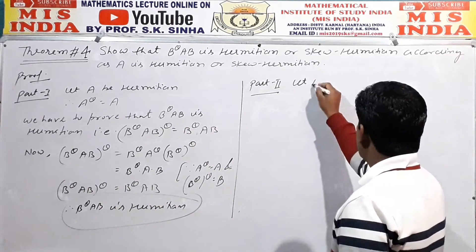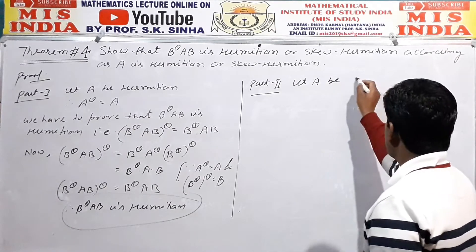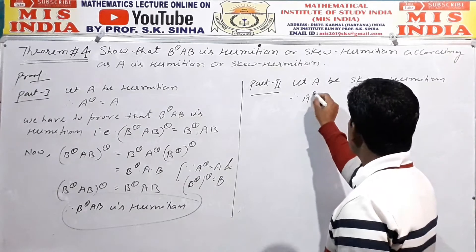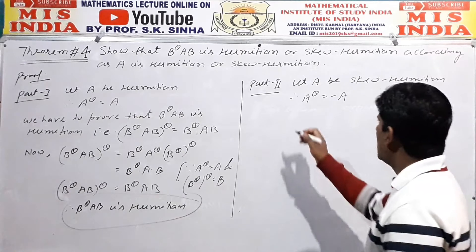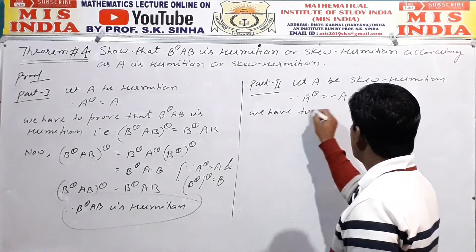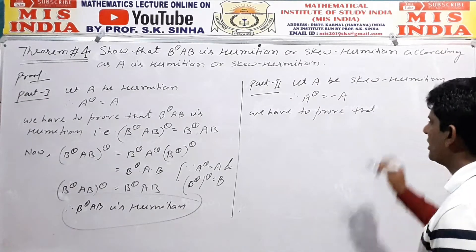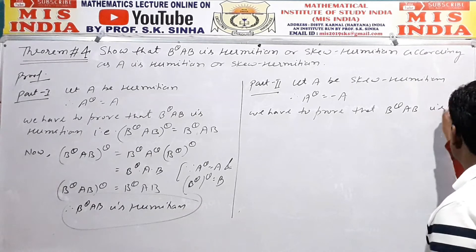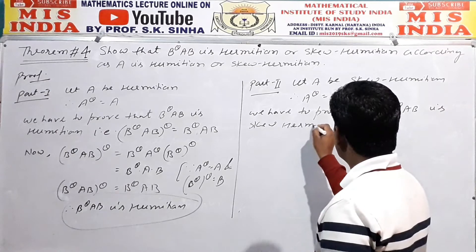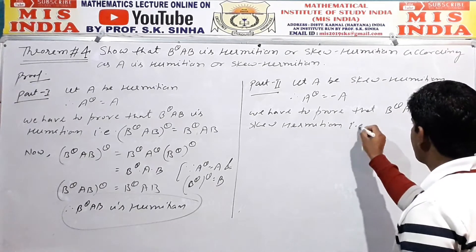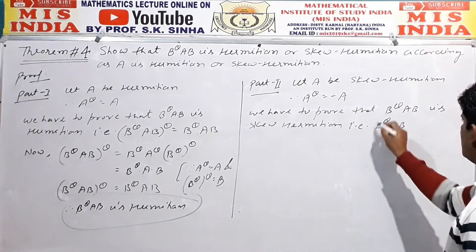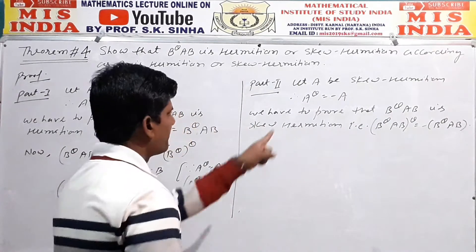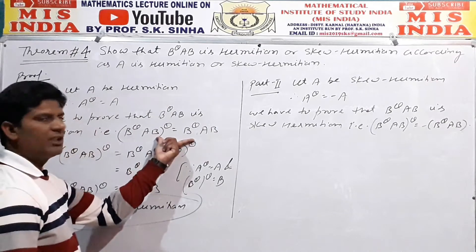Now part two: let matrix A be skew-Hermitian. Therefore, A raised to power theta is equal to minus A. We have to prove that B raised to power theta, A, B is skew-Hermitian. That is, B^θ AB raised to power theta is equal to minus B raised to power theta, A, B.